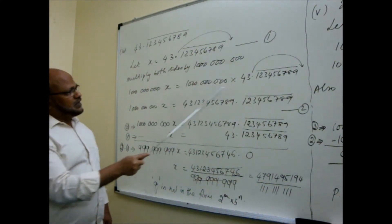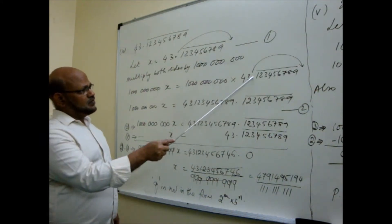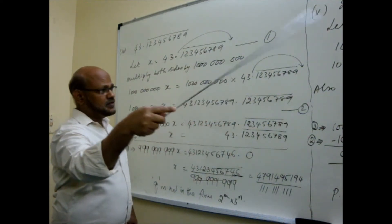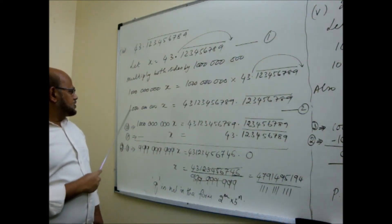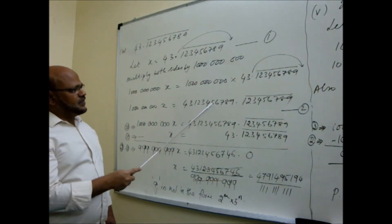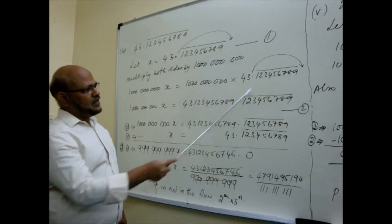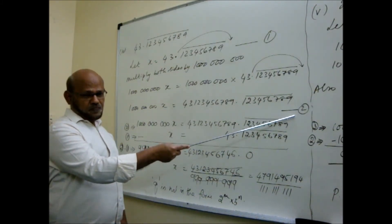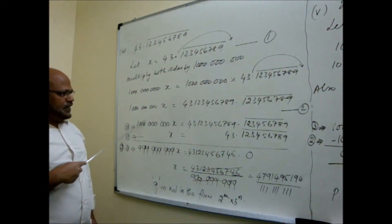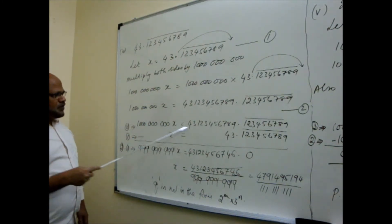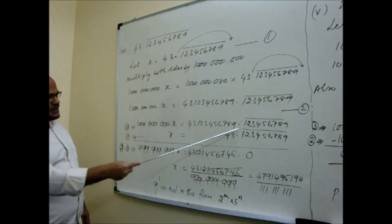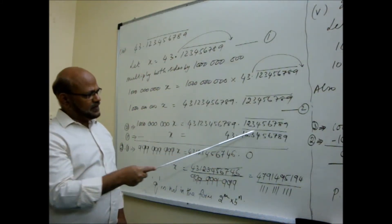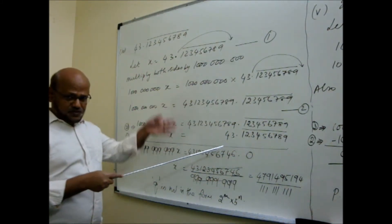Now what you do? You have to bring this point to the other side, over here. So you will have to multiply either side of this equation. Mark it as equation 1. Both the side multiply by this 1 followed by 9 zeros, you can call 1 billion. Multiply either side. So I get here 1 billion X is equal to 1 billion into that number. So what happens, that point will move to the other side over here. 9 digits will pass. Again the repeating factor will be available there. So you get 1 billion X is equal to 431234567890 point and that, again the repeating factor coming over here. And mark it as equation 2.